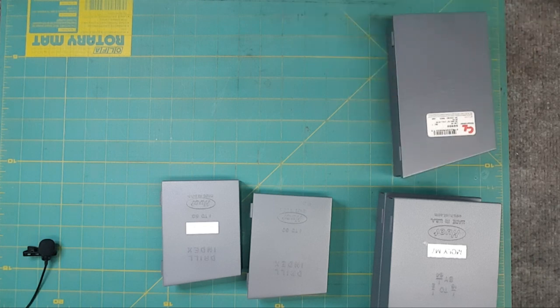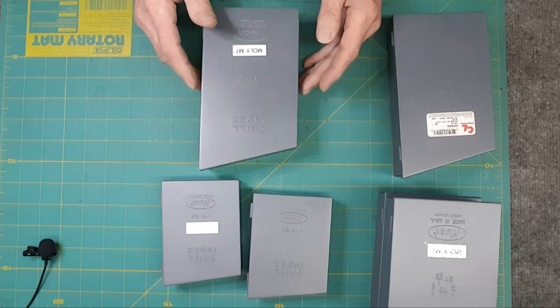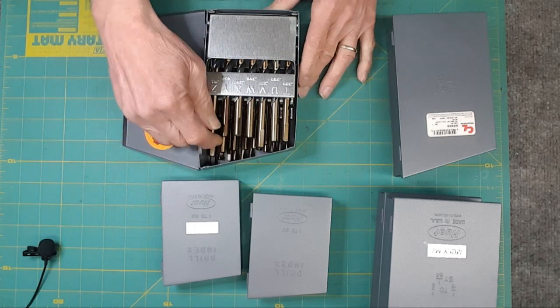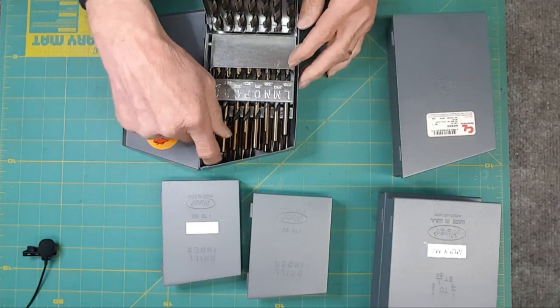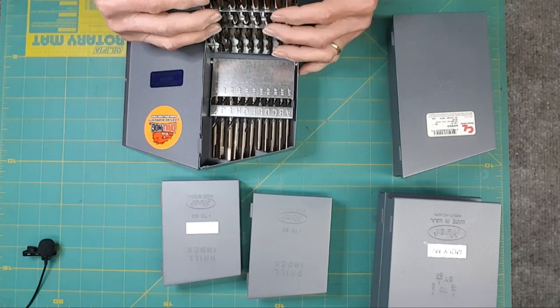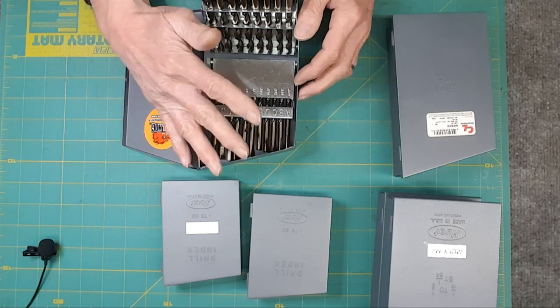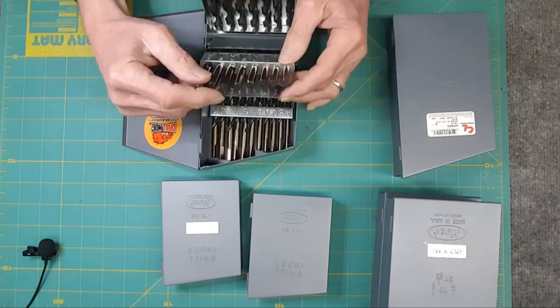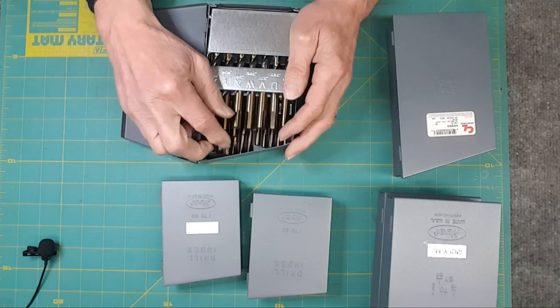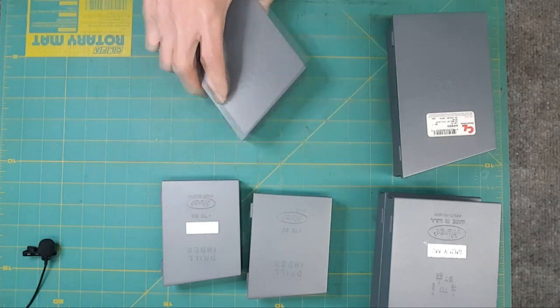Next up, many don't know this exists, A to Z. There is an A to Z set, again, drill hog, guaranteed for life. But they don't go down that small, you can see. But I have used them, there are some situations where this particular size doesn't exist any place else. So this gives me just about every size, I think, between all the sets, for what I want.